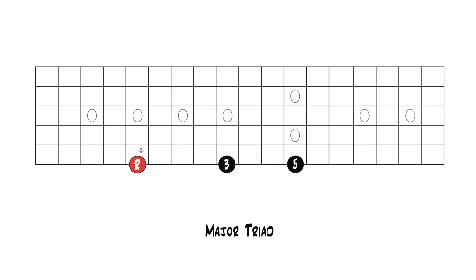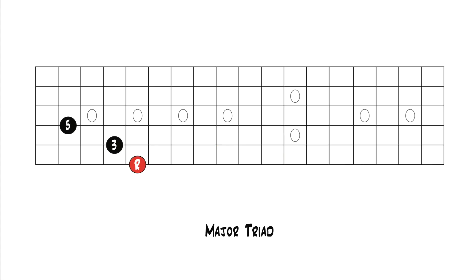To build a major triad in close position, if we start with our root, we need to move the major third to the closest adjacent string. So if you start with your root on the sixth string, your next note is always on the fifth string, and then your next note is always on the fourth string. The major third moves to the fifth string, the perfect fifth moves to the fourth string, and it looks like this — a close position major triad in root position.